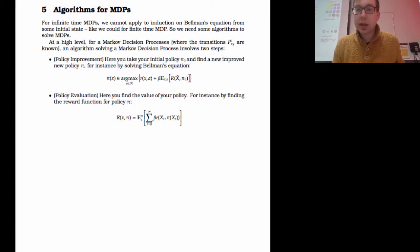For an infinite time Markov decision process, we can't do what we did before in the discrete time case and apply induction on Bellman's equation from an initial state and get the exact solution. So we need algorithms to solve these Markov decision processes. Sometimes you're lucky enough to have an analytically closed form solution, and we'll cover quite a few of those, but a lot of the time you don't, so you just need a procedure.